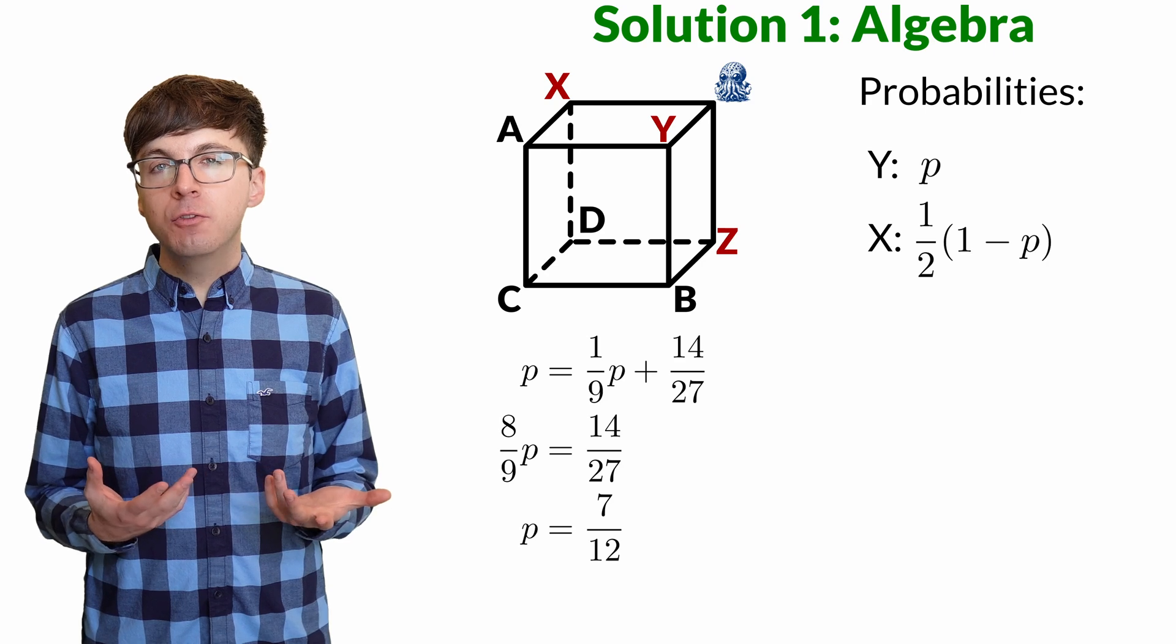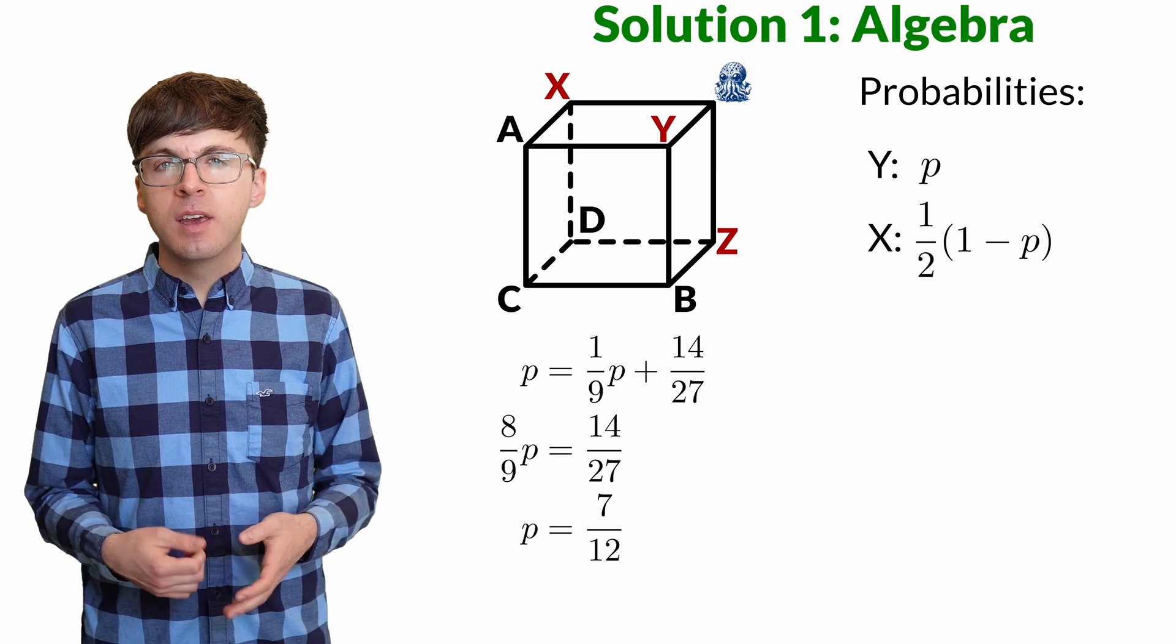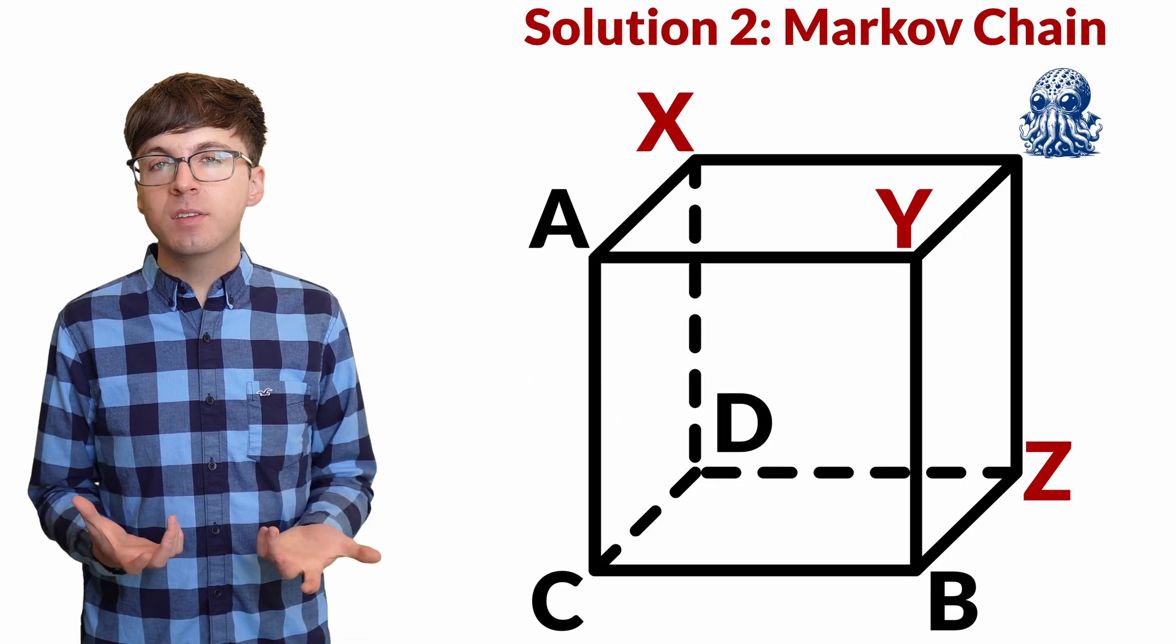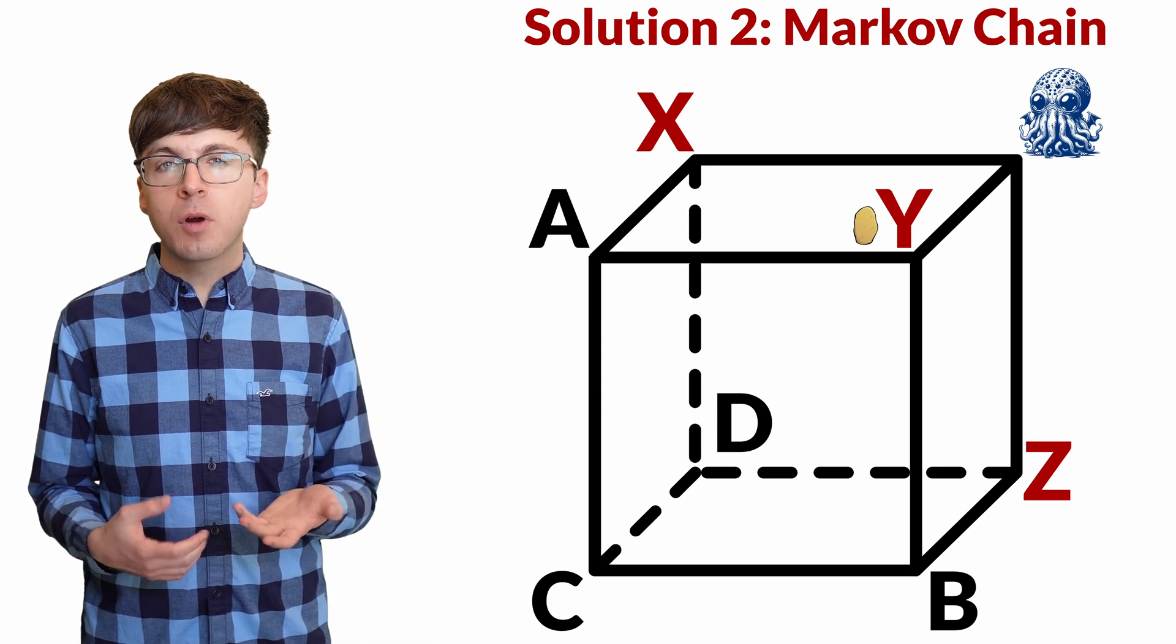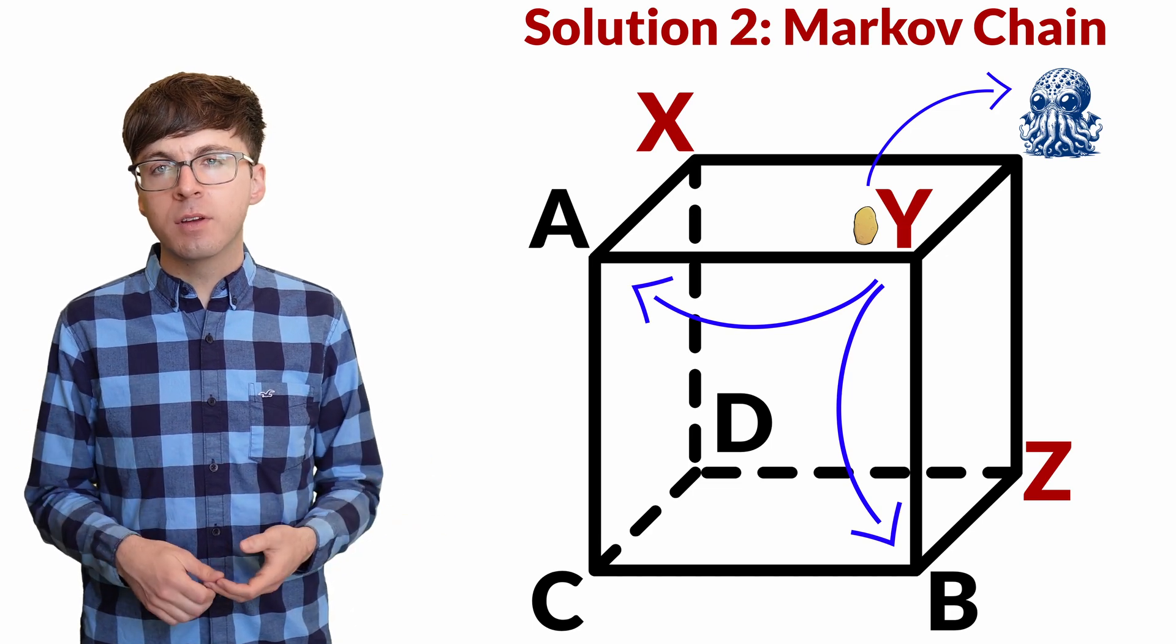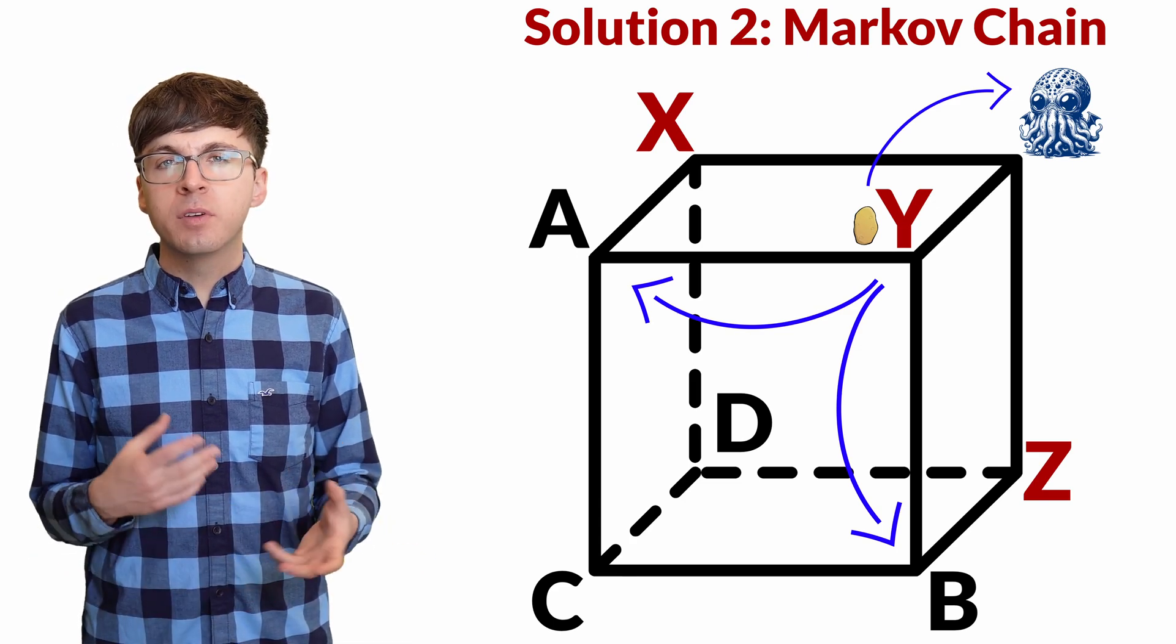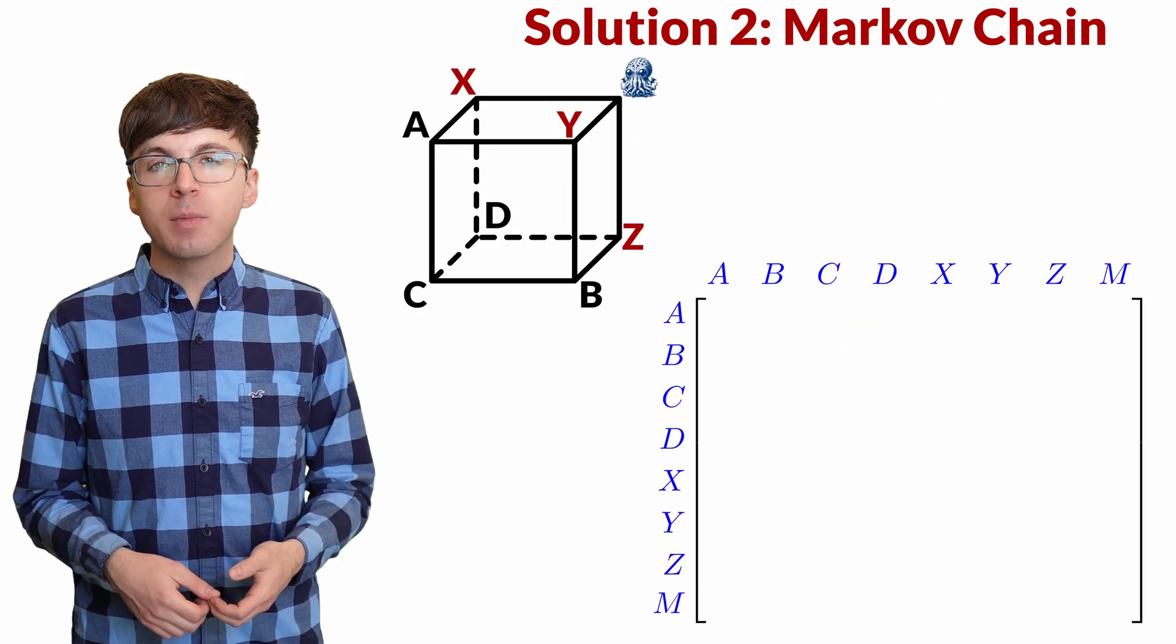I like this algebraic solution since it has so much nice symmetry. But it's definitely tricky in certain parts, and you might wonder how would we solve a similar problem that didn't have this much symmetry? We can do that by viewing this game as a Markov chain. This means that at each step of the game, the probabilities of throwing the potato in each direction don't depend on the whole history of the game. They only depend on where the potato is right now. In this case, there's always a one-third probability for the potato to be thrown in each direction.